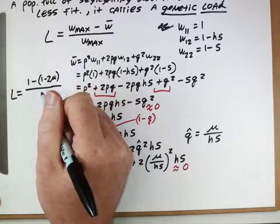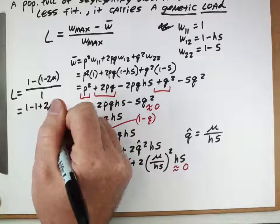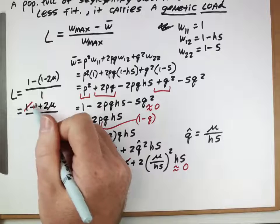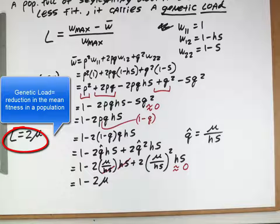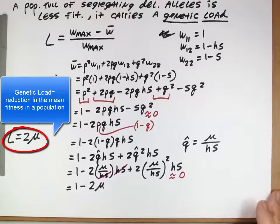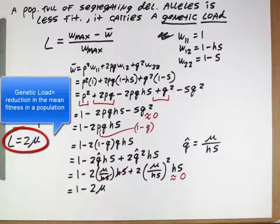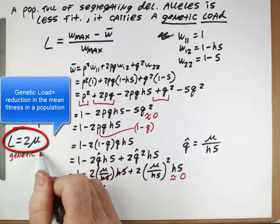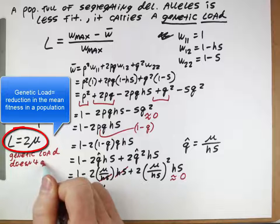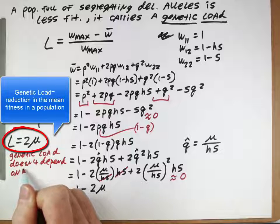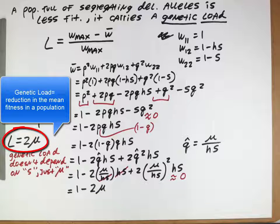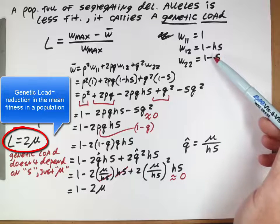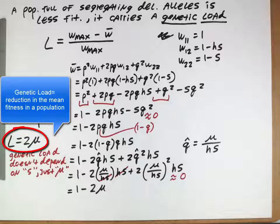So that's 1 minus 1 plus 2mu all over 1. Cancel, cancel. 2mu over 1 is just 2mu. So this genetic load, this reduction in the mean fitness for population because of these deleterious alleles, this genetic load is just twice the mutation rate. So the first interesting thing here is the genetic load doesn't depend on s, just mu. And this is really kind of a surprise, right. We would have perhaps thought that how bad these alleles were in the homozygotes would have had something to do with how much lower the mean fitness of the population would be, but that's not the case. This derivation shows that it's only the mutation rate that matters, not the reduction in fitness in individuals that have those mutations.